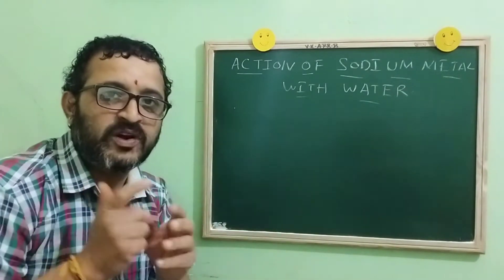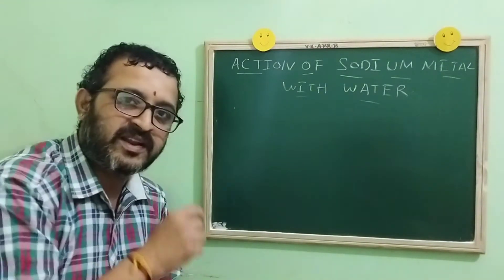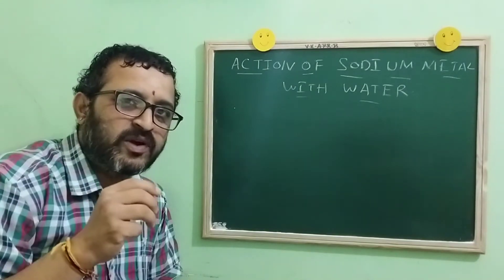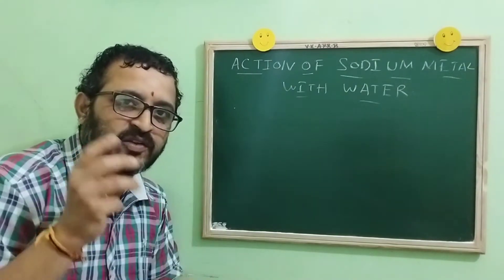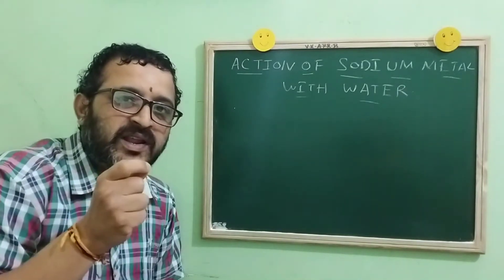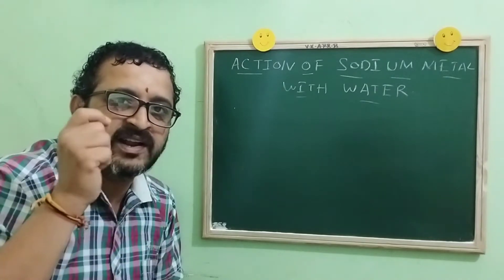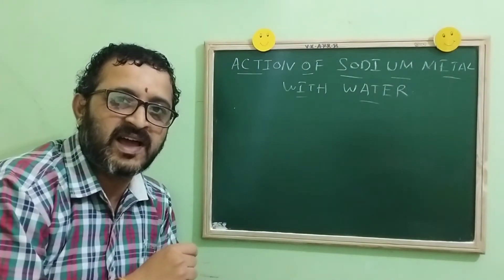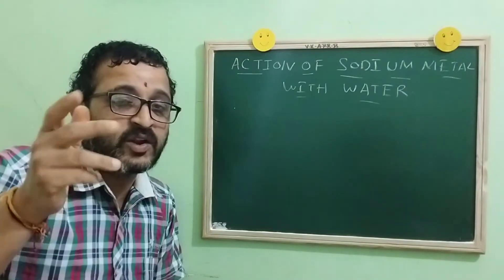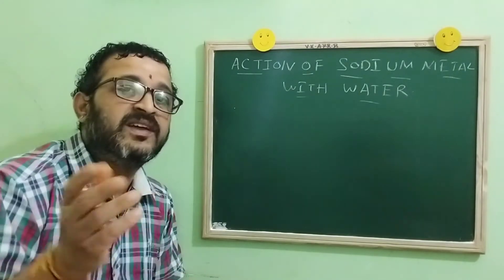We all know that sodium is a metal which belongs to group 1 of the periodic table. Children, you might have heard that sodium is stored under kerosene. The reason is very simple: sodium metal reacts very vigorously with oxygen, carbon dioxide, and the moisture present in the air. That's why it is stored under kerosene — sodium and kerosene have no reaction, that is, it does not react with kerosene.